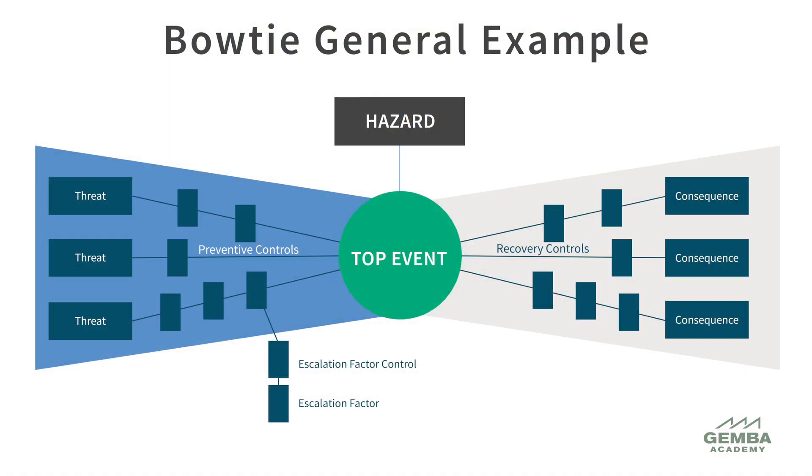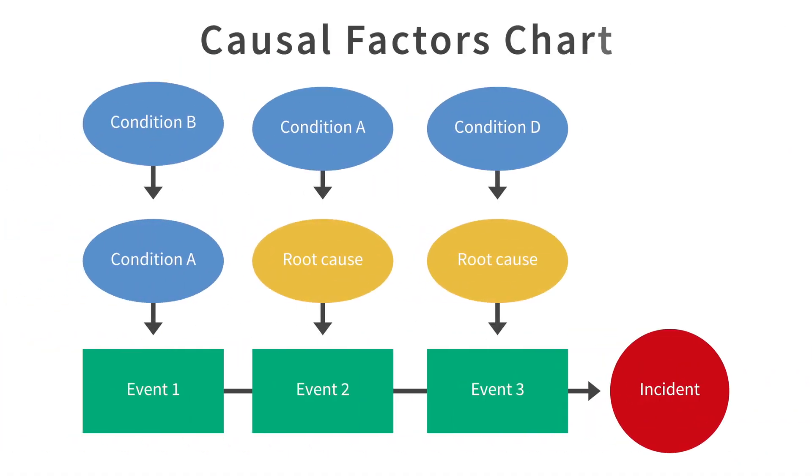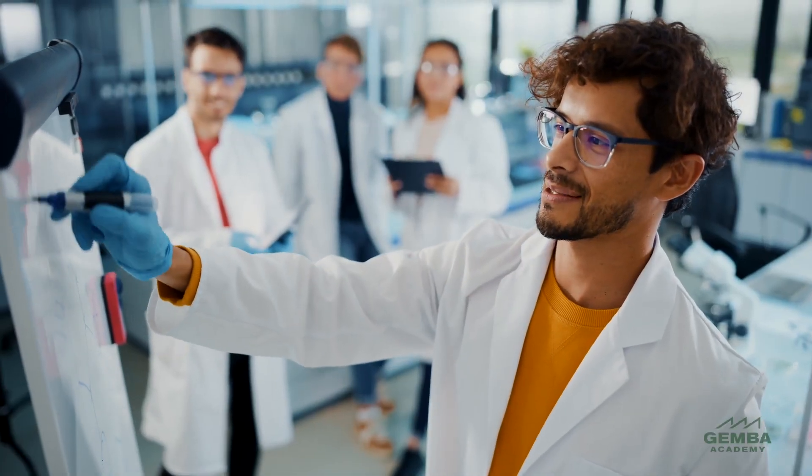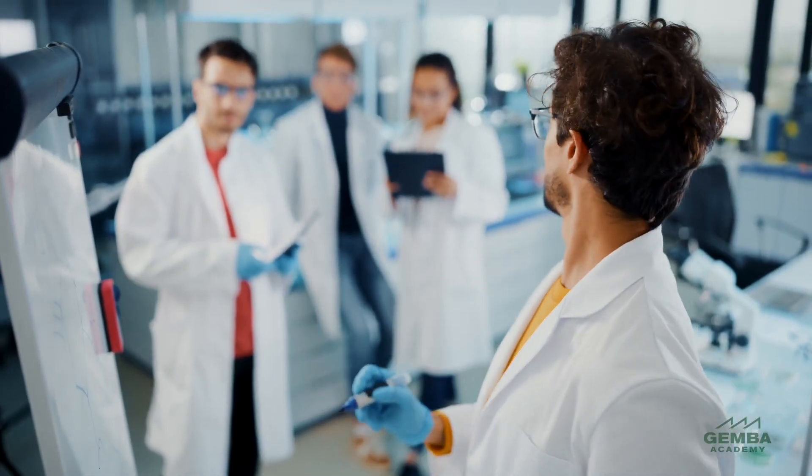Another predecessor of bowtie analysis is causal factors charting. The concept of causality mapping is woven into the design of bowtie analysis as we model the relationship between causes, the top event, and its consequences.